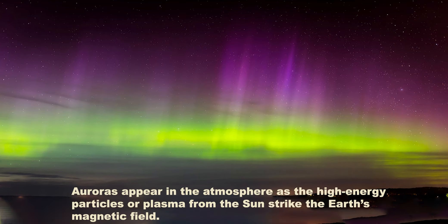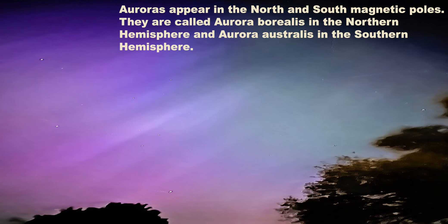Auroras appear in the atmosphere as high-energy particles or plasma from the sun strike the Earth's magnetic field. They appear near the north and south magnetic poles and are called aurora borealis in the northern hemisphere and aurora australes in the southern hemisphere.